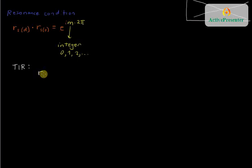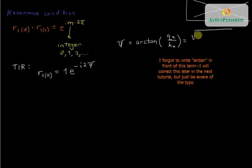And we know that total internal reflection is going to have a magnitude of 1. And then there's going to be a phase term, which I'm going to call e to the minus i times 2ψ. And we already know that this phase 2ψ is equal, I'll write it up here, where ψ is equal to the arctangent of what we call Q imaginary over Kx.